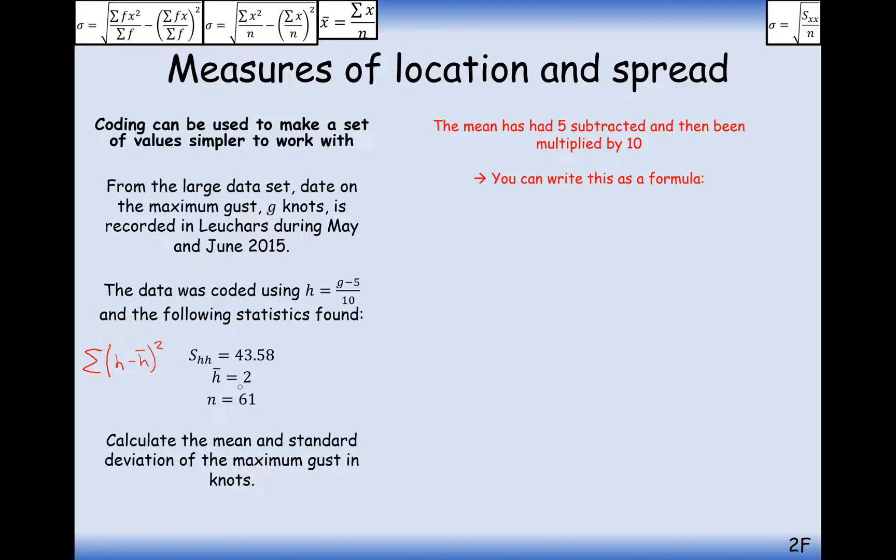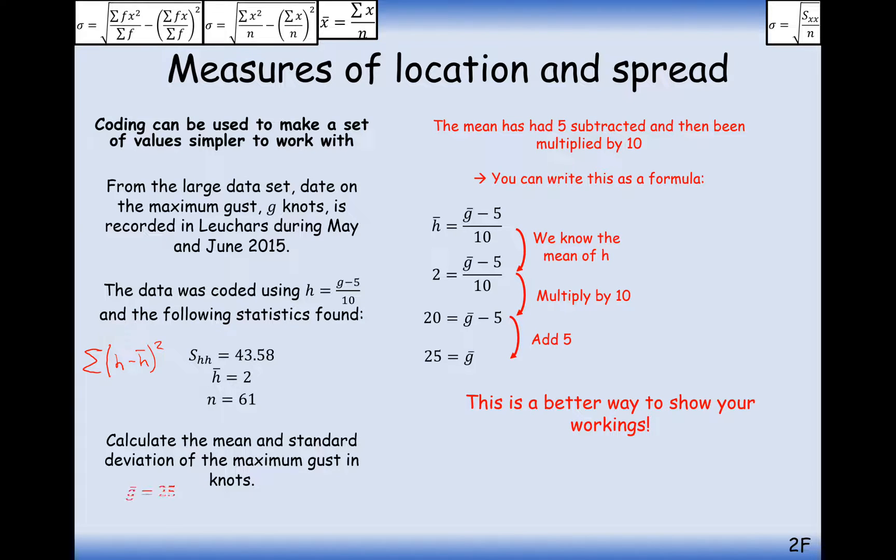Calculate the mean and the standard deviation of the maximum gusts in knots. So, what we've got here is the mean of the H values. So it shouldn't be too hard to work out the mean of the G values. All we've just got to do is undo this coding here. So we've got to times by 10 and then add on 5. We can think of this as rearranging a formula. So the mean in the gusts is going to be 25 knots. Okay, so 25 is the mean of knots for the maximum wind speed in May and June.